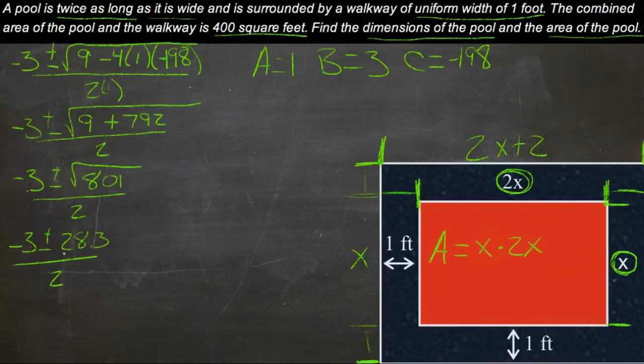Now if we had negative 3 minus 28.3 over 2, we'd have a really negative number, and obviously getting a negative number for x wouldn't make any sense, because we can't have a negative width. So we're going to ignore that and go with the plus.